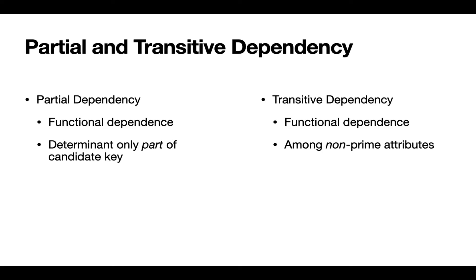A partial dependency is still a functional dependence, but it's a dependence in which the determinant — the left-hand side part, the x — is only part of a candidate key. It's not the entirety of a candidate key, which means the dependency uses attributes on the left-hand side that cannot be used to uniquely identify a row within the table. We're going to look for partial dependencies in the first normal form version of the data, and when we find those, that's a signal that we need to break them as part of the process of going from first normal form to second normal form.